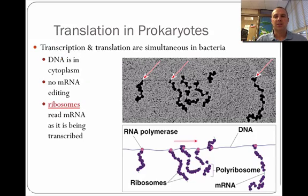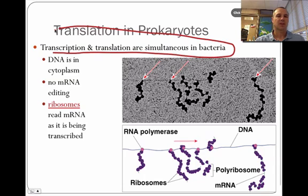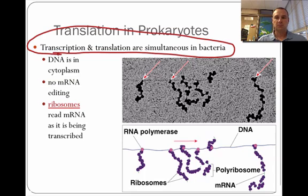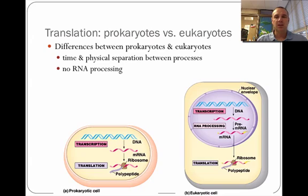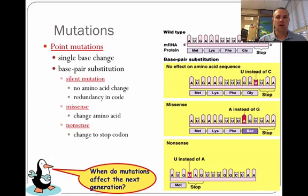When we talk about translation in prokaryotic cells, one key factor is that transcription and translation are simultaneous in bacteria — they occur at the same time. Think about it: they don't have a nucleus, so you don't have to deal with mRNA leaving the nucleus. As DNA is being changed to mRNA, the ribosomes are already reading it, so it happens pretty quickly. In eukaryotes, the mRNA has to travel from the nucleus to the cytoplasm to be translated, whereas in prokaryotes it happens almost instantaneously.